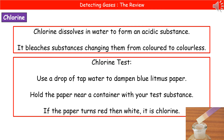First, make the litmus paper moist with a drop of tap water. Then hold that damp blue litmus paper just above the surface of the container with the test gas. What you'll see is it initially turns red, and then it's bleached to white. Red then bleached white means you have chlorine gas. The red colour indicates an acidic substance formed when chlorine dissolves in water, and the bleaching leaves a colourless — hence white-looking — compound.